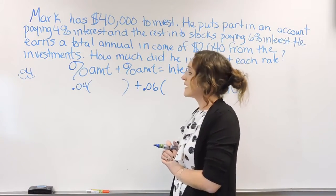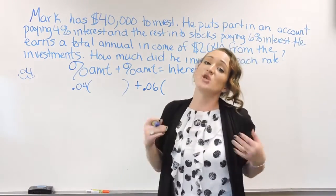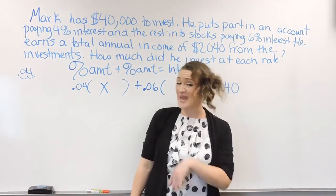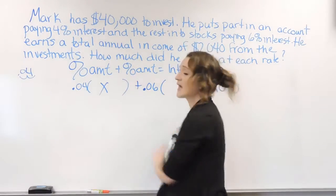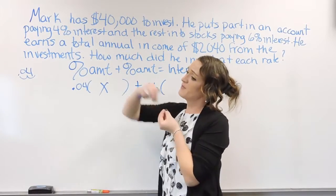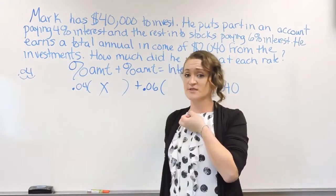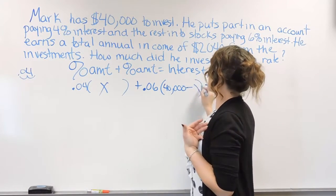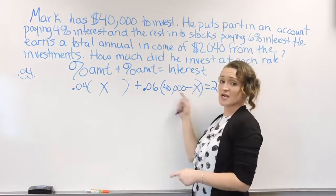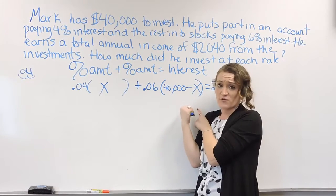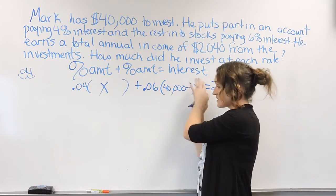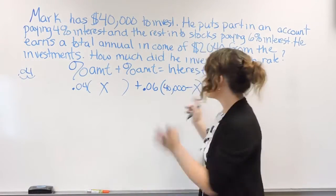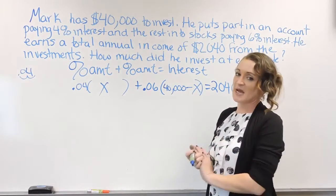The only thing we need to figure out is the amounts. We don't know how much he put into each account — all we know is that together they add up to $40,000. So let's call the first amount X. He put X into the 4% account. If he had $40,000 but put some away, then what's left over is $40,000 minus X, and that's how much went into the 6% account. Pick one amount to be X, and the other will be your total minus X — this works every time for investment problems.